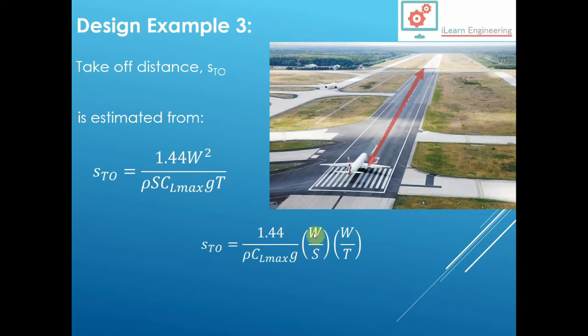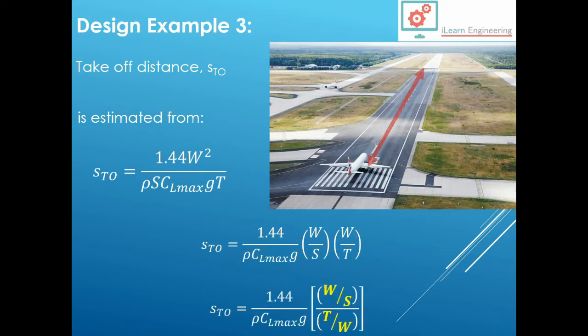The W over S, that's the wing loading. But this you'll notice is the inverse of the thrust loading, because with the thrust loading, the thrust is on the top and the weight is on the bottom. So we need to turn that the other way around. So if we do that, we can put it on the bottom of the equation. And you can see now that we've rearranged the equation in terms of the wing loading and the thrust loading.